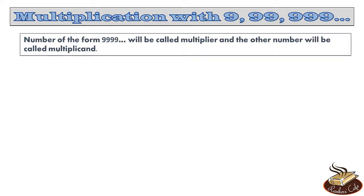Hello everyone and welcome to our next video. In this video, let's first learn how to multiply a number with another number of the form which has repeating nines. That is, let's learn how to multiply a number with say 9 or 99 or 999 or 9999 and so on. For convenience, let's follow the nomenclature that the number of the form repeating nines is called multiplier and the other number is called multiplicand. So we can study this type of multiplication under the following three heads.